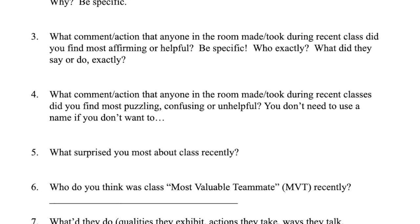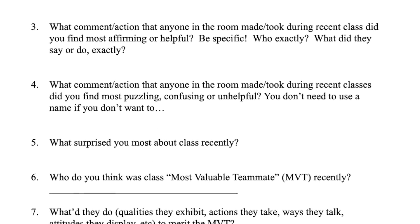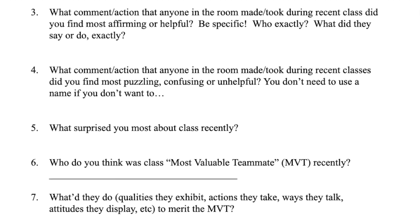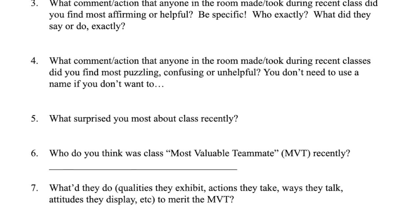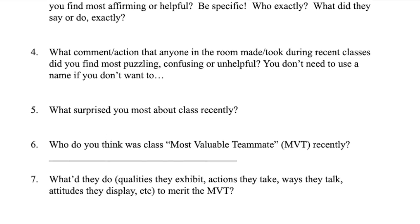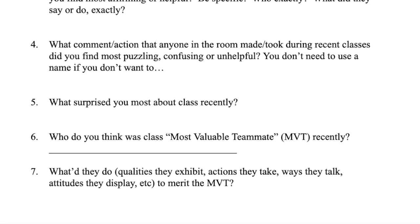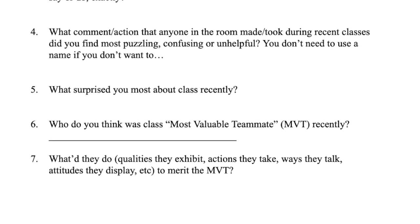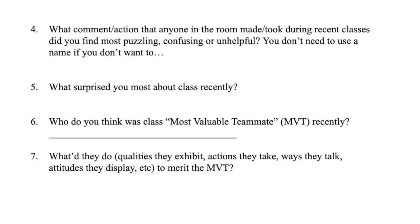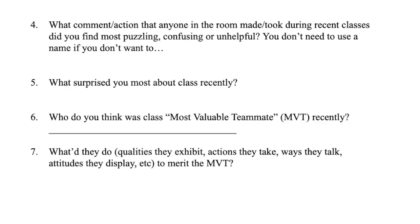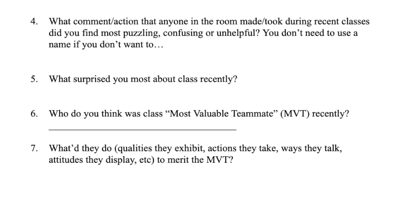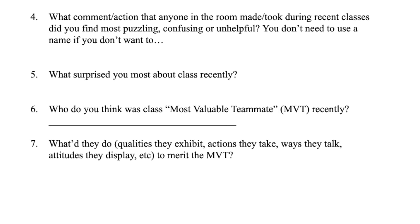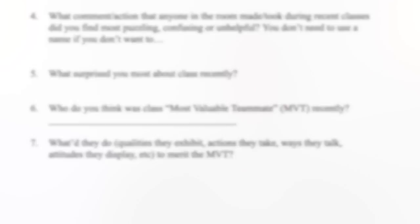Number four: what comment or action that anyone in the room made or took during recent classes did you find most puzzling, confusing, or unhelpful? You don't need to use a name if you don't want to. Number five: what surprised you most about class recently? Six: who do you think was the class's most valuable teammate — MVT — recently? Seven: what did they do? Qualities they exhibit, actions they take, ways they talk, attitudes they display, to merit the MVT.